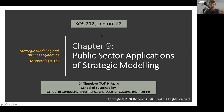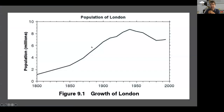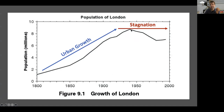Chapter 9 had a lot in it. I meant it to be an example of how to model a complicated problem, similar to what you're doing in your projects, and an example of how you can take your model and use it to learn more in-depth things about these systems. Let's start with the initial example they opened with, where they're trying to explain urban growth dynamics. If you look across a wide range of cities including London, you find this pattern of growth followed by stagnation.